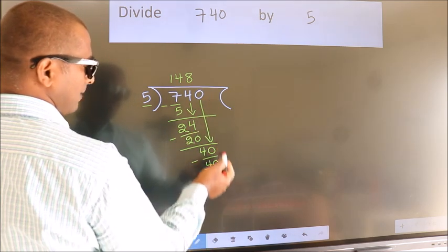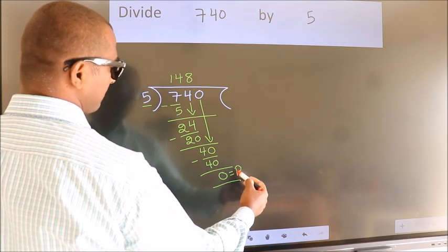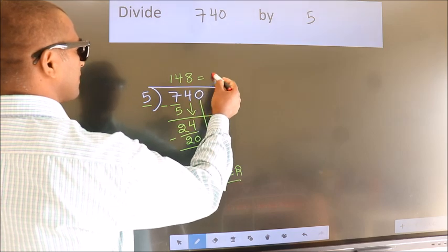No more numbers to bring it down. So we stop here. This is our remainder. This is our quotient.